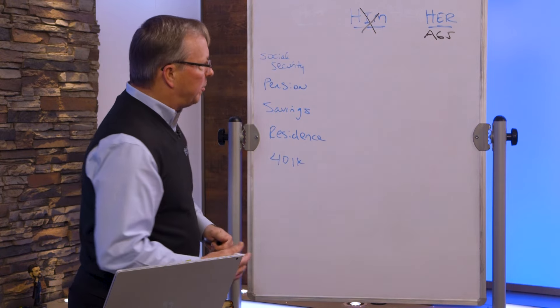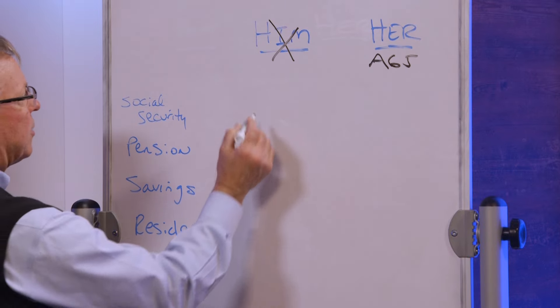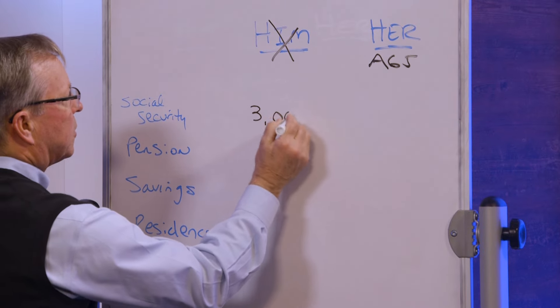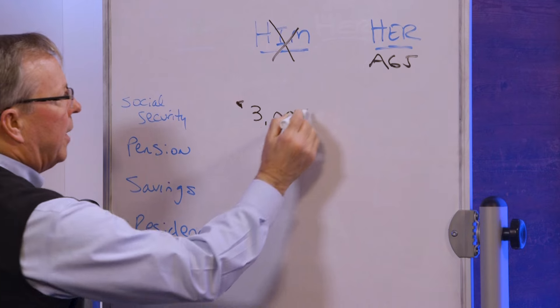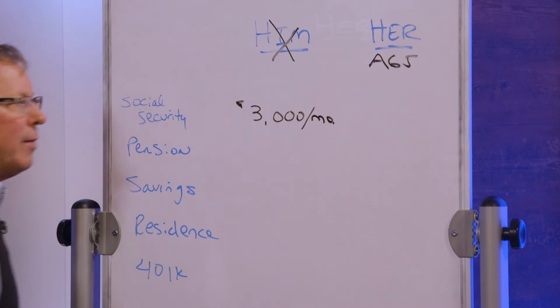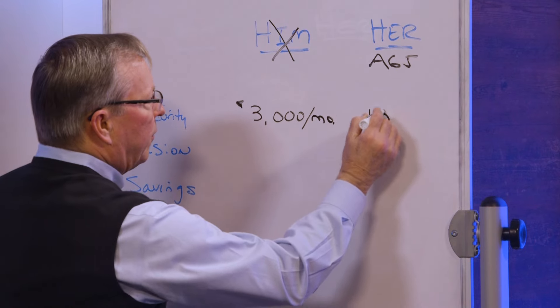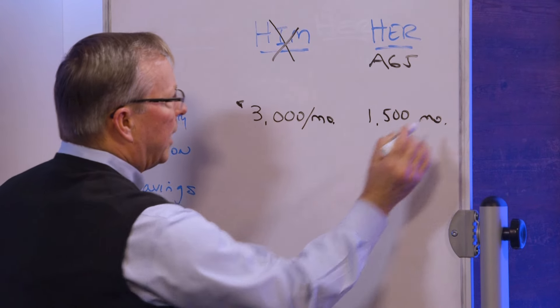So let's kind of go over the numbers they had. So before he passed away, and I'm just going to ballpark these so we can do the numbers real quick, he was drawing $3,000 a month in Social Security. She was drawing $1,500 a month. Okay, let's kind of look at the parameters.